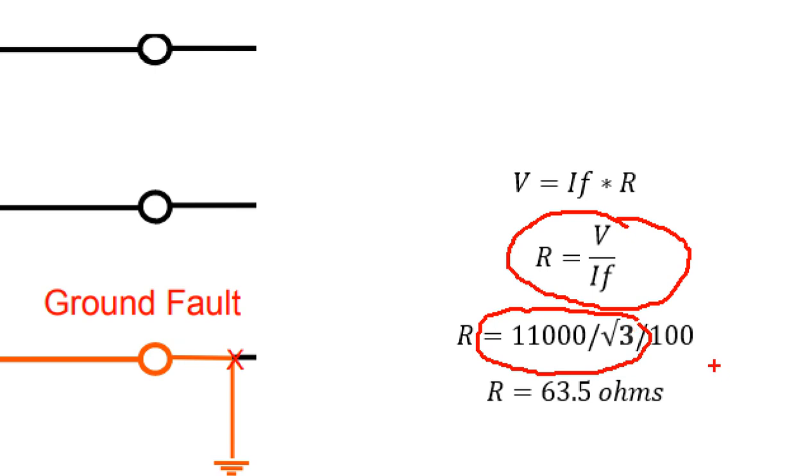This is the line voltage and phase. If the current is equal to 100, it is 100A. If we have the resistance, we can calculate the maximum capacity. This is the value of NGR.